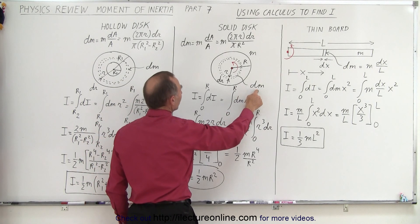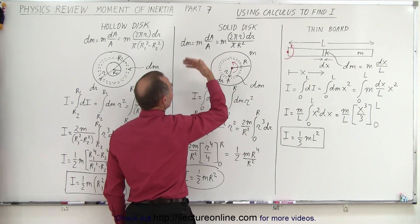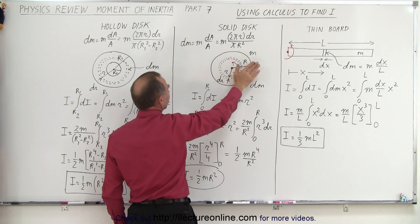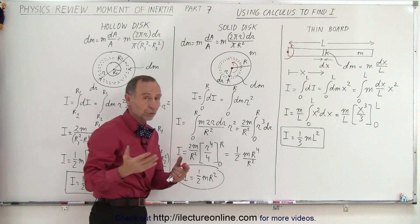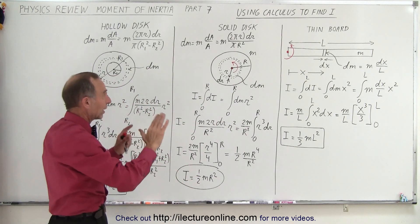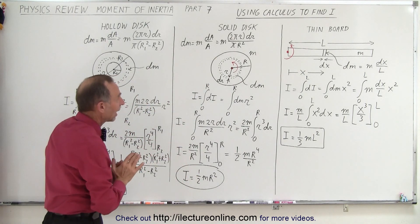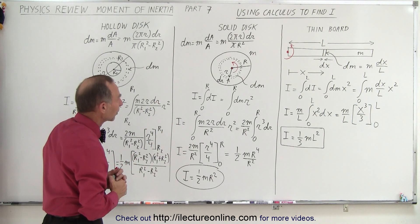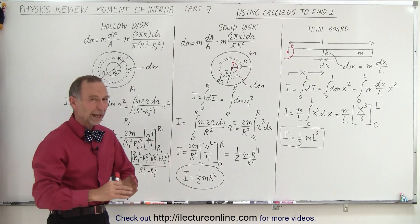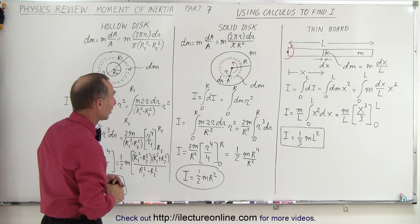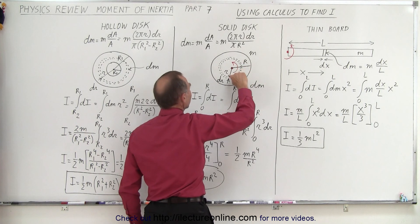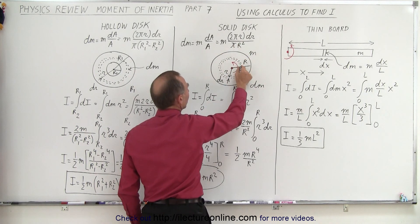And now we need to evaluate what dm is. So dm is going to be the mass of the object times the ratio of the area of this little ringlet right here divided by the total area of the disk. Because we presume that the mass is proportional to the area if it's a thin disk, and the density is evenly distributed. Or the mass is evenly distributed, so we have even proportional density.